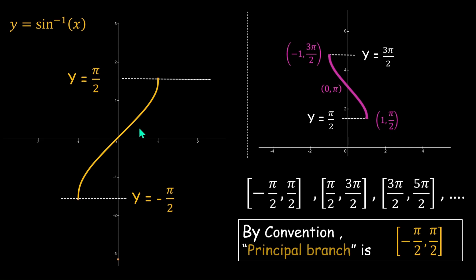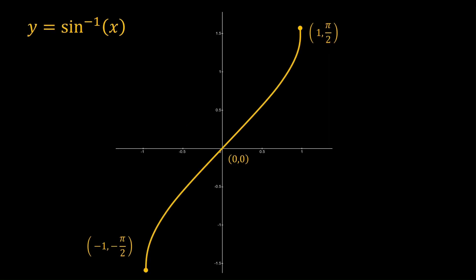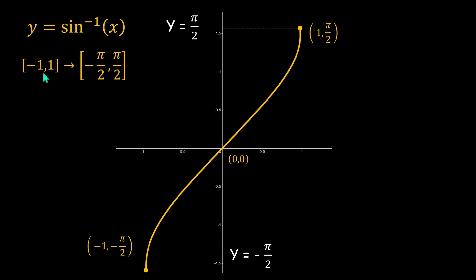So we have fixed the principal branch, understood why we don't consider other ranges, and successfully plotted y = sin⁻¹x on that branch. The curve goes from -π/2 to π/2. Its domain is [-1, 1] (both included) and its range is [-π/2, π/2] (both included). And that's all for today, thank you.